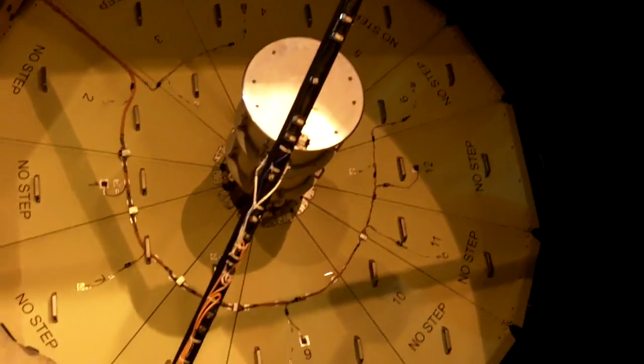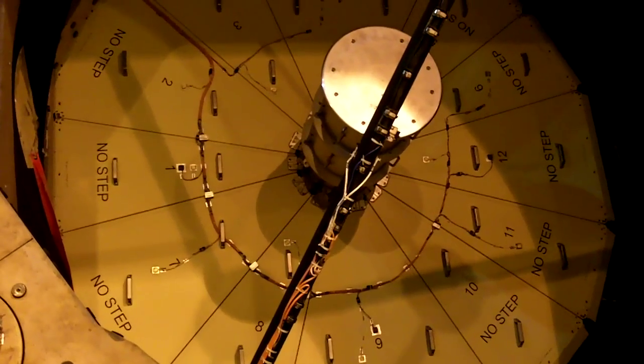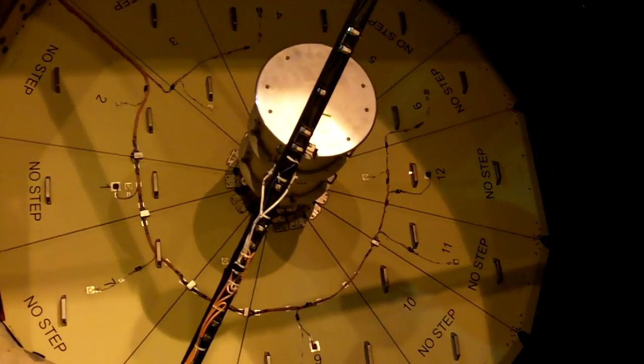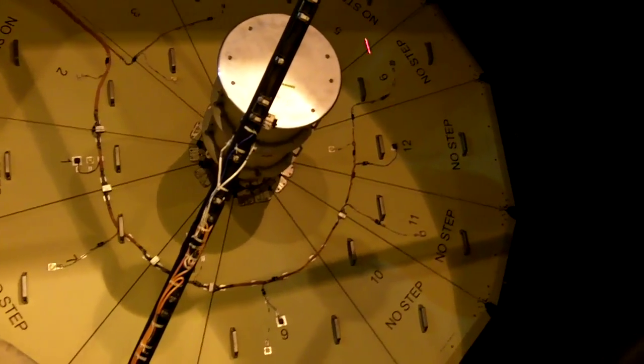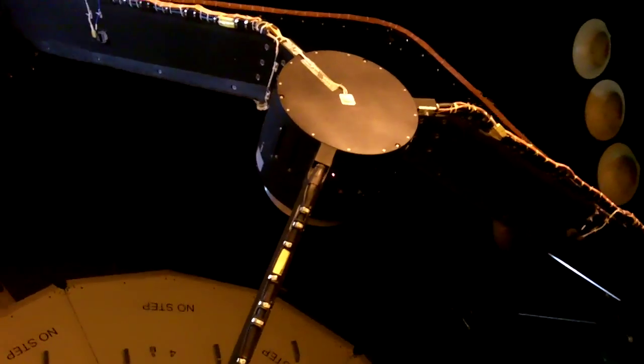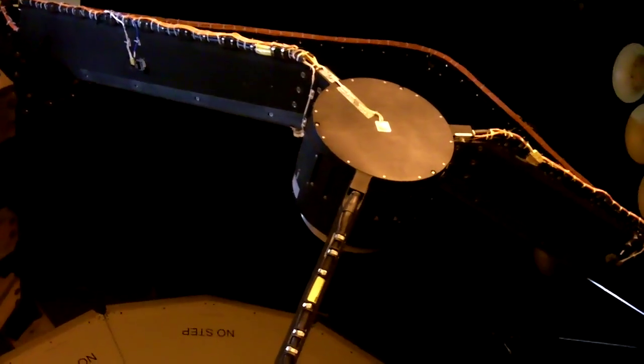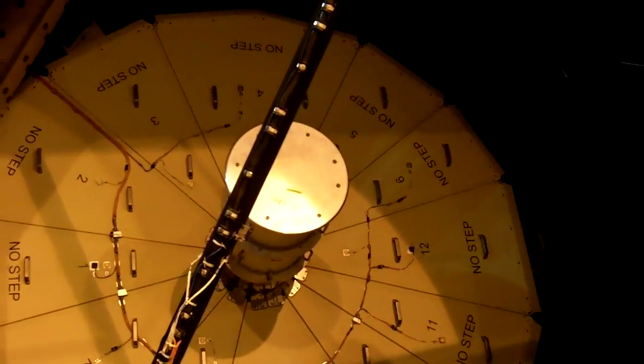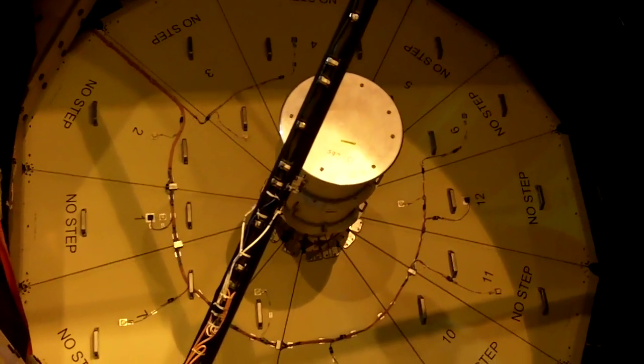Underneath this yellow protection cover there is the primary mirror located. From there the infrared photons will be reflected to the secondary mirror which is right underneath that housing on top of this three-legged structure. And from here the beam will be reflected to the tertiary mirror which is located in the center of the primary mirror.